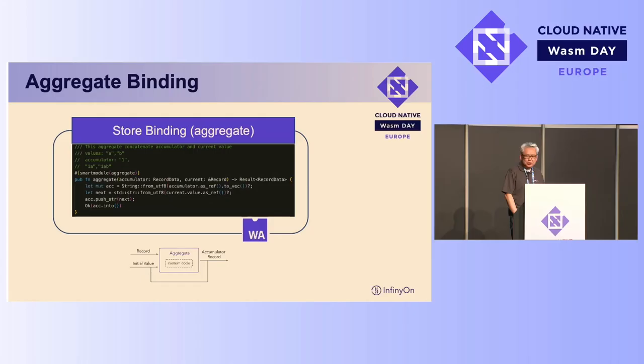The next binding, aggregate, is different. With aggregate, we maintain an interim state and pass that state back to the SmartModule to do further processing. With aggregation, you can implement things like sum, average, mean, and max.